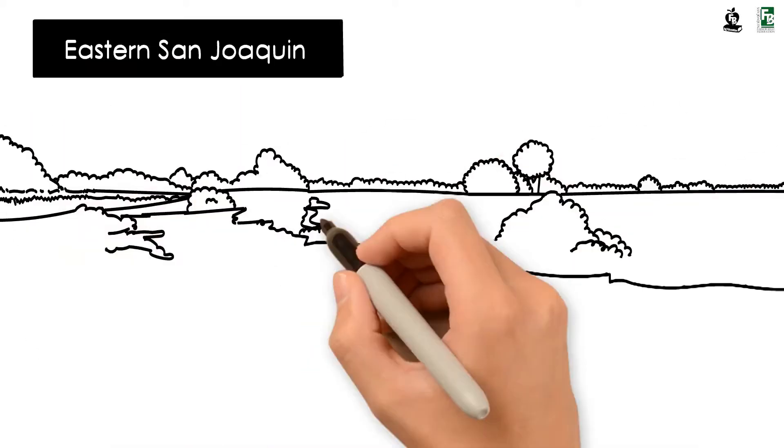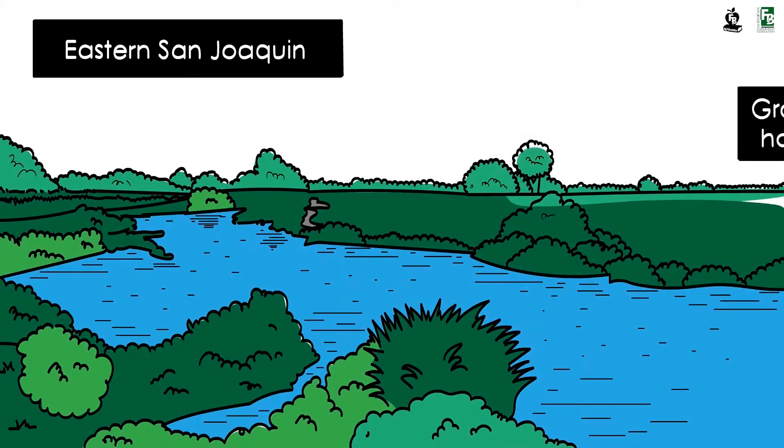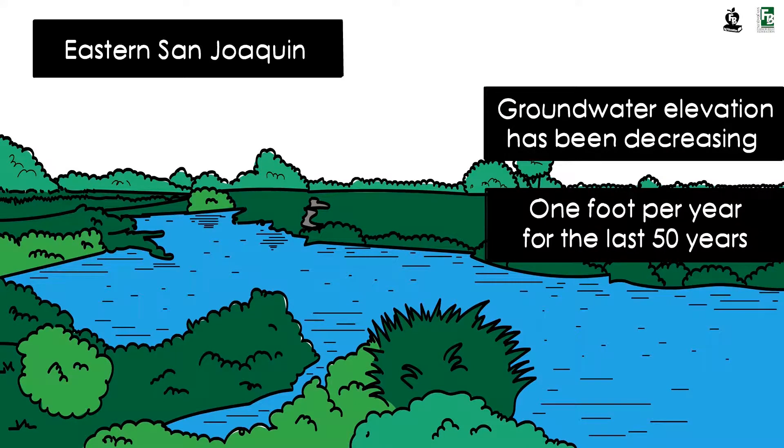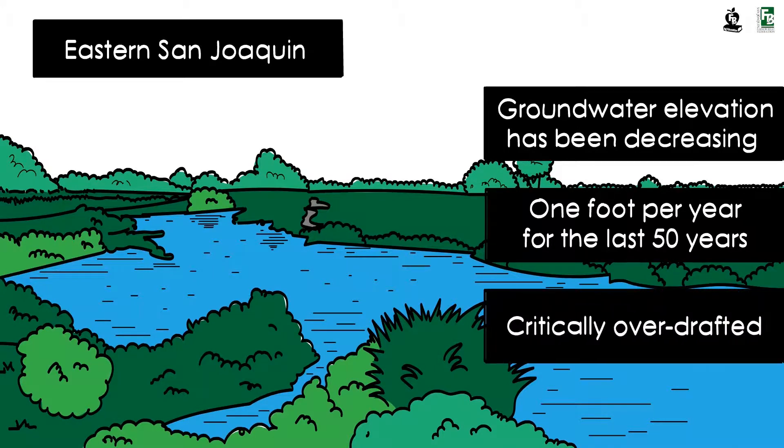The Eastern San Joaquin sub-basin is the largest, and its groundwater elevation has been decreasing by an average of one foot per year for the last 50 years. This resulted in a state designation of the sub-basin as being critically overdrafted and required a GSP to be submitted to the state in 2020.